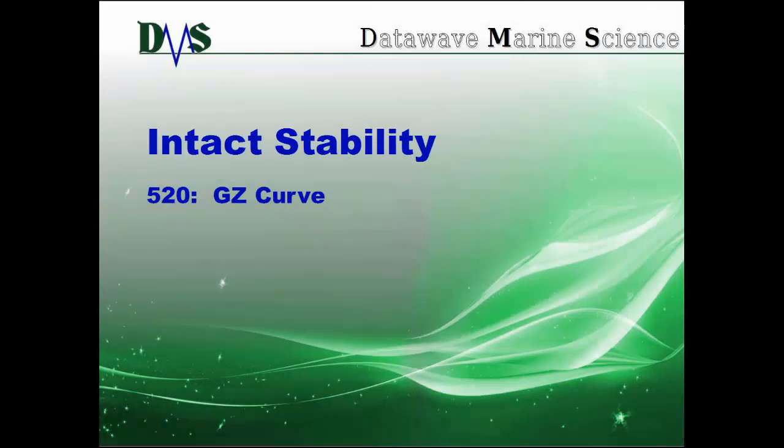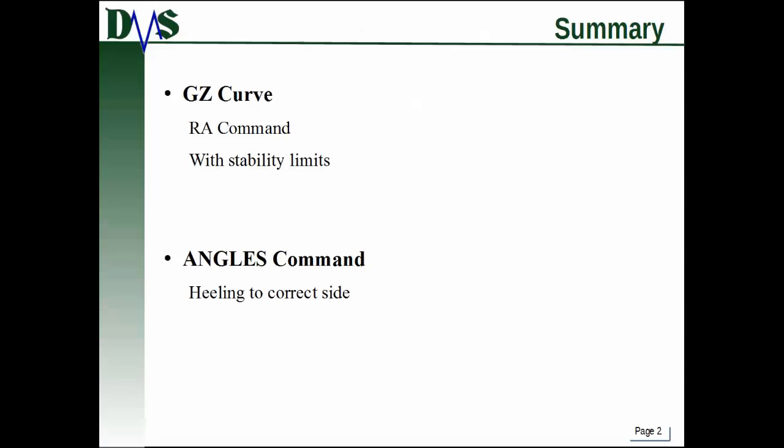Welcome to this tutorial on intact stability. Tutorial number 520 focuses on the GZ curve. Today we're talking about the GZ curve specifically and the righting arm command in GHS, which is how you run the GZ curve. We'll also cover how to use this to generate and evaluate stability limits, and then we'll talk about the angles command, which is a support command for the GZ curve.